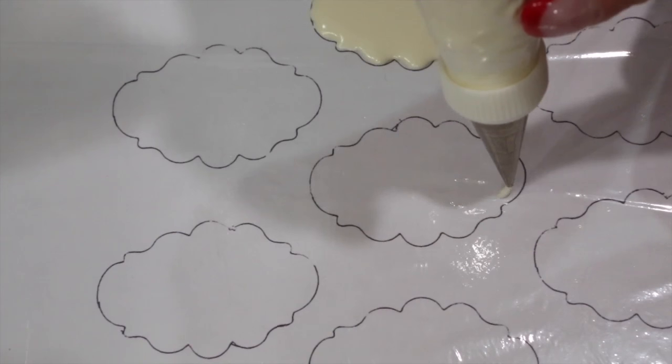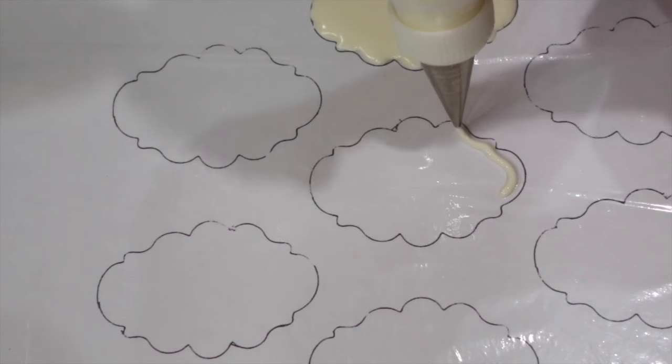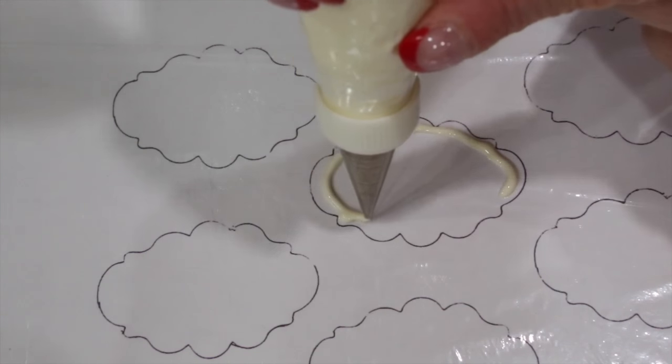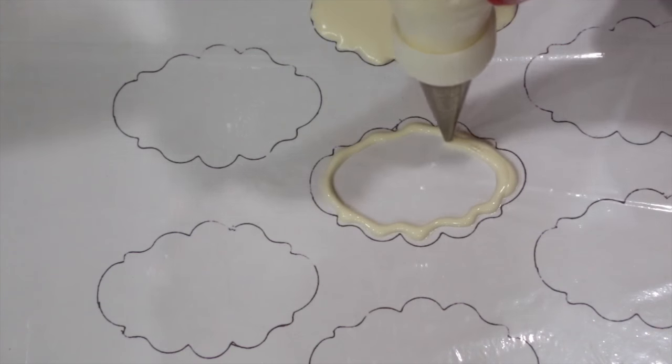Place a template underneath some food-grade cellophane. With a number two nozzle and some flood consistency cream icing, outline the shape of the plaque template and fill it in.